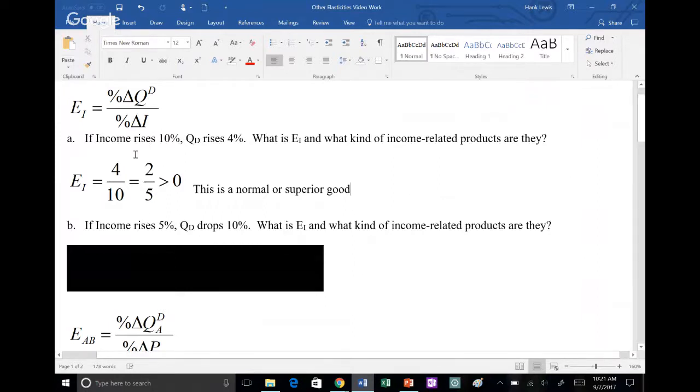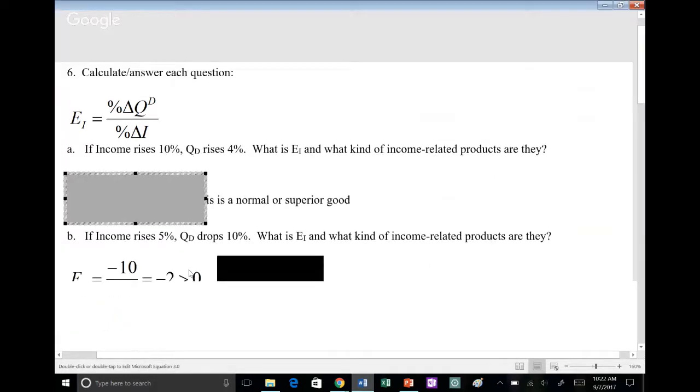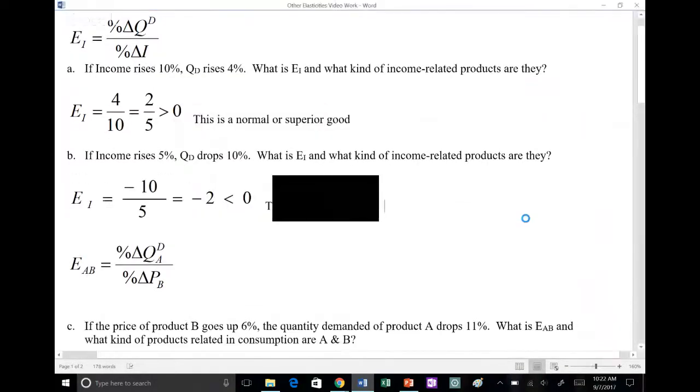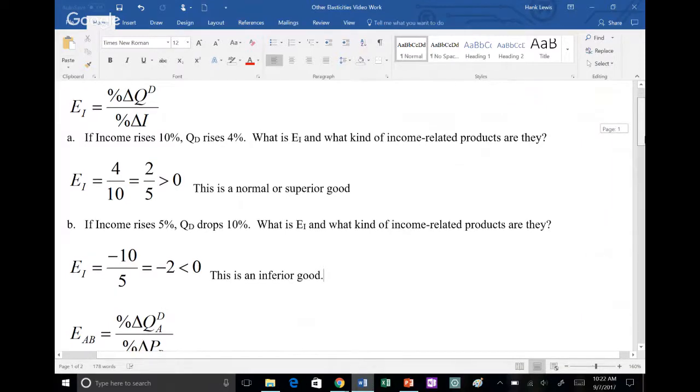For part B, it's the same coefficient E sub I, but this time you're told if income rises 5%, is that positive or negative? Positive. Quantity demanded drops 10%, is that positive or negative? Negative 10. When you plug those numbers in the formula, the denominator gets a positive 5 and the numerator gets a negative 10. You reduce this to an integer, a whole number that's negative, negative 2. Since the income elasticity coefficient is negative, this tells us when income goes up people buy less of these products, and if income goes down they buy more. That's going to be an inferior good. That's your first elasticity coefficient.